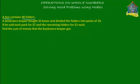One box contains 96 folders. A bookstore keeper bought 32 boxes and divided the folders into packs of 10. If he sold each pack for seven dollars and the remaining folders for one dollar each, find the sum of money that the bookstore keeper got.